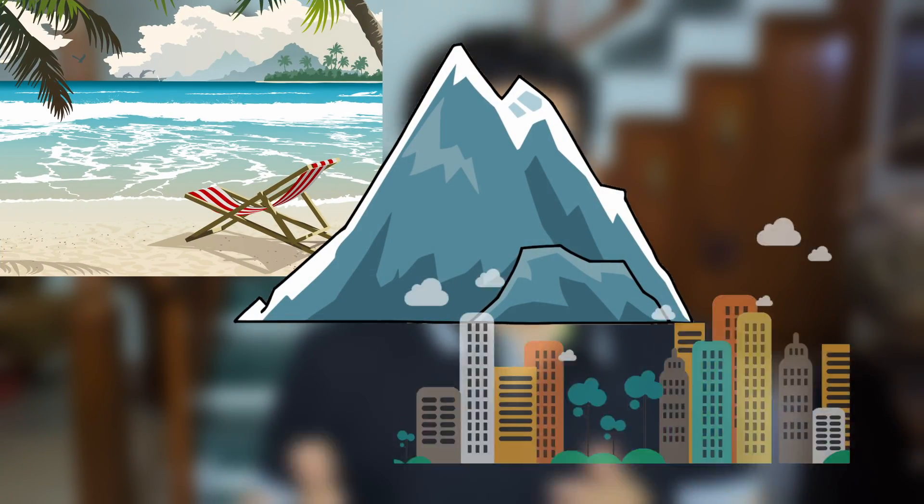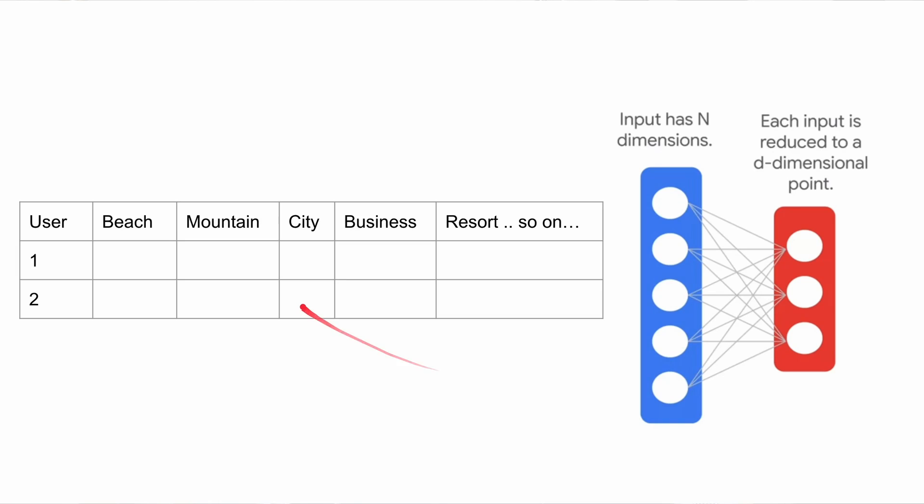The problem with this data structure is that we have too many features — too many columns. Imagine having to deal with 300,000 different columns. To avoid this, we'll do some feature engineering. Maybe we can create some embeddings. Creating embeddings basically means reducing the dimensions of your feature dataset. In this case, we might categorize hotels into beach hotels, mountain hotels, or city center hotels. But having only three types is too aggregated, so we'd add dimensions like: is it a business hotel or a resort? Is it a five-star, four-star, or one-star?